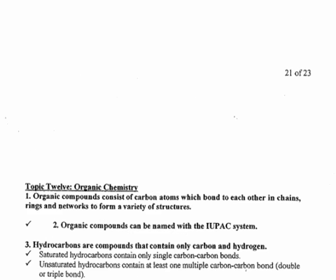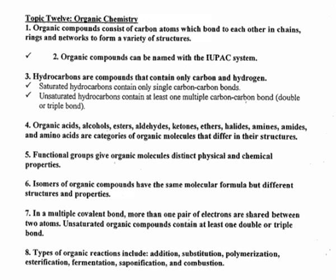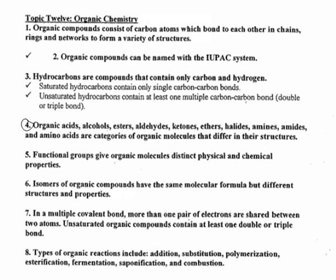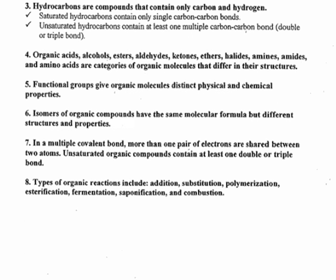Topic 12 is Organic Chemistry. I'm not going to go into this too much because we just had the test on it. Hydrocarbons contain only carbon and hydrogen. Saturated means single bonds; unsaturated has at least one double or triple bond. Here's Table R. Isomers have the same molecular formula but different structural formulas. Multiple bonds share more than one pair of electrons. We also need to know the seven types of organic reactions.